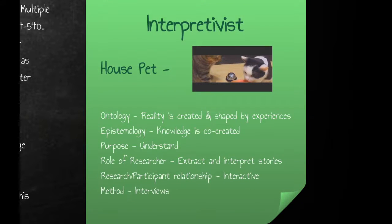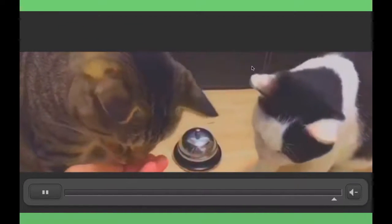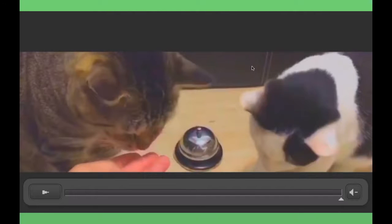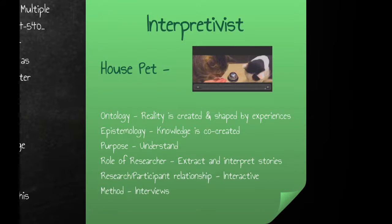Next we have the interpretivist paradigm. The example I thought of for this was the house pet. House pets are similar to the interpretivist paradigm in that they are responsive, interactive, and relational. There are attempts to understand the needs and personalities of the owner as well as the pet. In this way, knowledge is created and shaped by both. In the interpretivist approach, researchers allow stories and experiences to come from the subjects, and then attempt to interpret and present these stories through various means of coding.